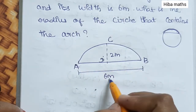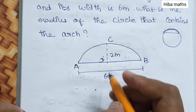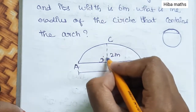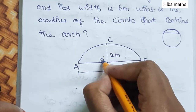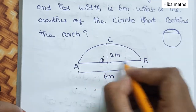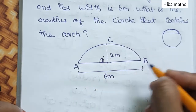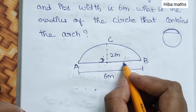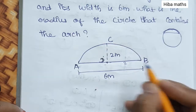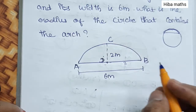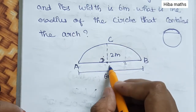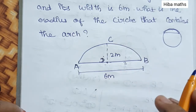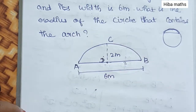AB is 6 meter. CD height is 2 meter. AB full length is 6 meter, so half is 3 meter. DB is 3 meter. This is the radius of the circle.